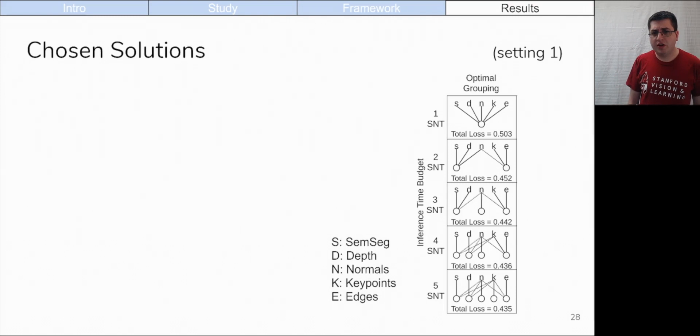Here are the chosen networks for each budget. In this example, three full-size networks were chosen. One solves semantic segmentation, depth estimation, and normal prediction, though the decoder for normal prediction is thrown away at test time. The next solves normal prediction alone. The final network solves normal prediction, surf key points, and canny edges. Again, the decoder for normal prediction is thrown away. Notice how normals is a popular auxiliary task for all budgets.